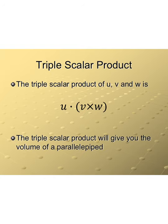Another major application of the cross product is the triple scalar product. It involves three vectors u, v, and w, and is defined as the dot product of u with the cross product of v and w: u · (v × w). The triple scalar product always gives the volume of a parallelepiped formed by the three vectors.